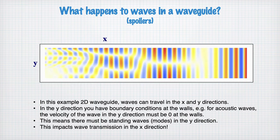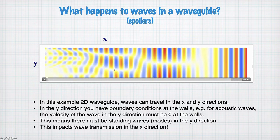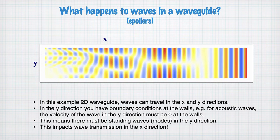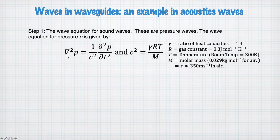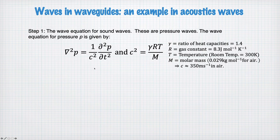The different modes that have different patterns in y travel at different speeds, and the math will show us how that works. For a sound wave propagating in a pipe, we need the three-dimensional wave equation, where grad-squared represents all second-order spatial derivatives. The square of the velocity c-squared is given by a ratio of heat capacities, temperatures, and molar mass — for air it comes out to about 350 meters per second at standard room temperature and pressure.